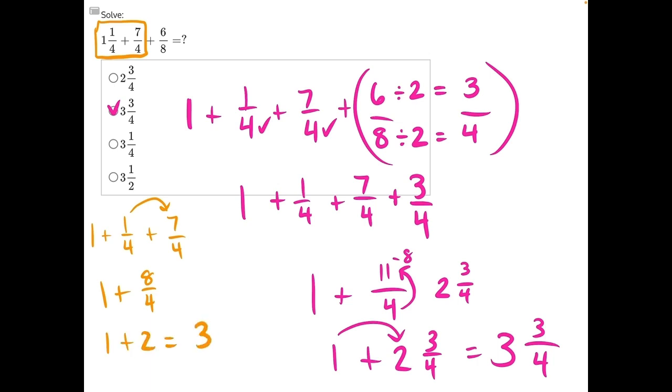And then the only thing we have left to do from there is tack on our six eighths and simplify six eighths down. The greatest common factor between six and eight is two. So we divide the top and bottom by two to get three over four, still simplifying down to three and three fourths and making answer choice B our correct answer.